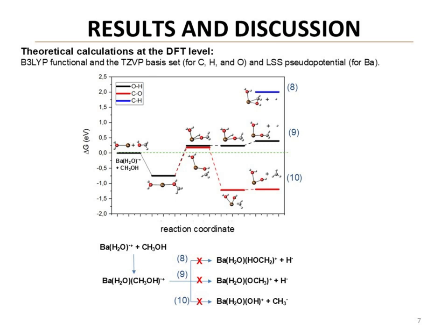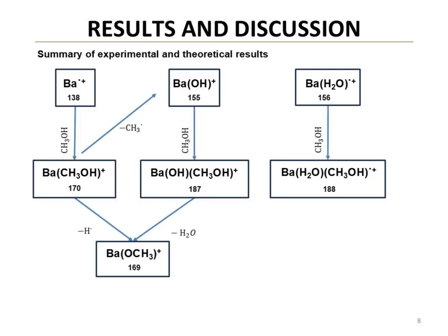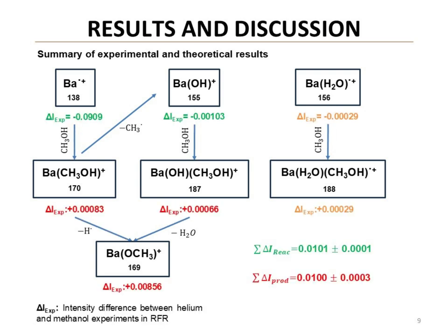For the barium-water complex ion, no channel leads to product; all species form stable association complexes with methanol. The diagram summarizes the experimental and theoretical results, illustrating how each reactant species is connected to its corresponding association complex in the first step. Both barium-plus and barium-OH+ yield the same product in a second step, through the loss of a hydrogen atom and water molecule respectively. Confirmation was achieved by analyzing the variation in experimental intensity.